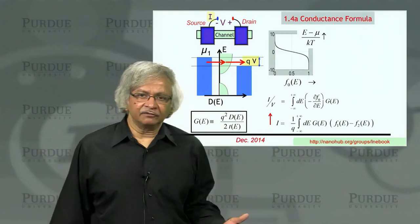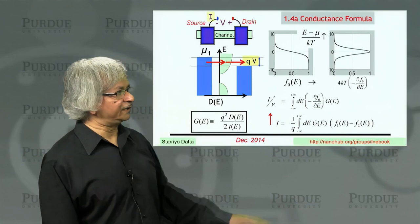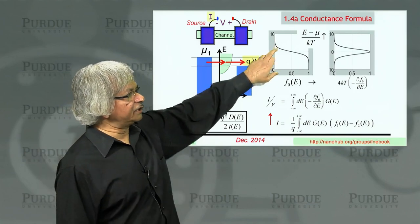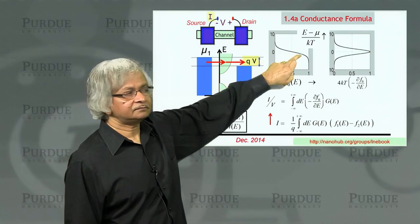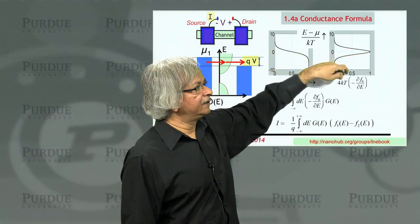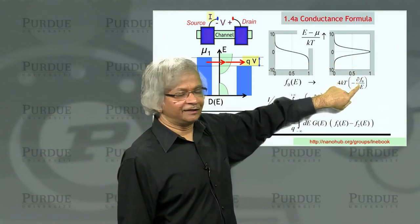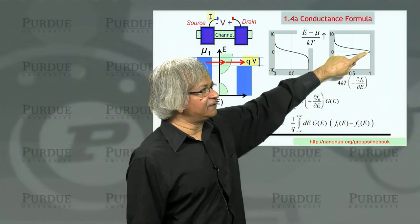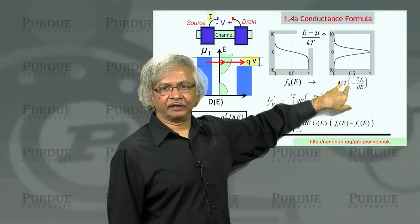Now what about the derivative of this? That's this dF/dE. The derivative looks something like this: right around zero the derivative is the highest, that's where it's changing the most. That's this peak value. And that peak value—what we have plotted here is 4kT times del F del E—so the peak value of this derivative is actually 1 over 4kT.